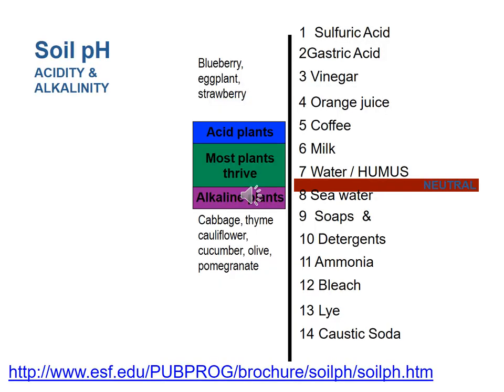pH is important — most plants do really well right around 5.5 to 7 pH, which is basically neutral soil pH. Some plants like acid, such as blueberries; some like more alkaline soils, like some of the cabbage family plants and olives. This slide also gives you some idea of pH levels by referencing common food items — bleach is very alkaline, vinegar is very acidic.